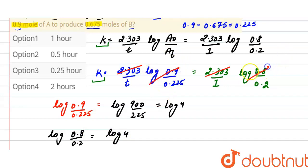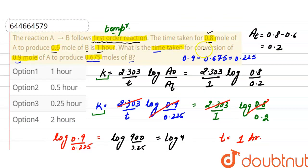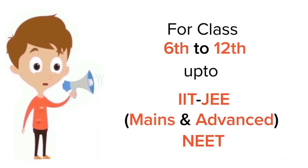So here time required is 1 hour for the completion of, or we can say for the conversion of 0.9 mole of A to 0.675 moles of B. So here the correct option is option 1.